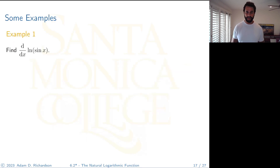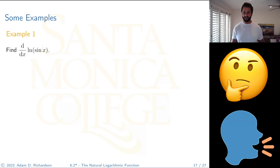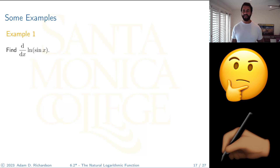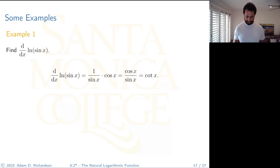Now let's do some examples. Try to compute the derivative of ln(sin x) on your own first. We've got a composition of functions, so we'll use the chain rule. By the chain rule: 1/sin(x) times the derivative of sine, which is cosine — giving us cos(x)/sin(x), which is cotangent of x.